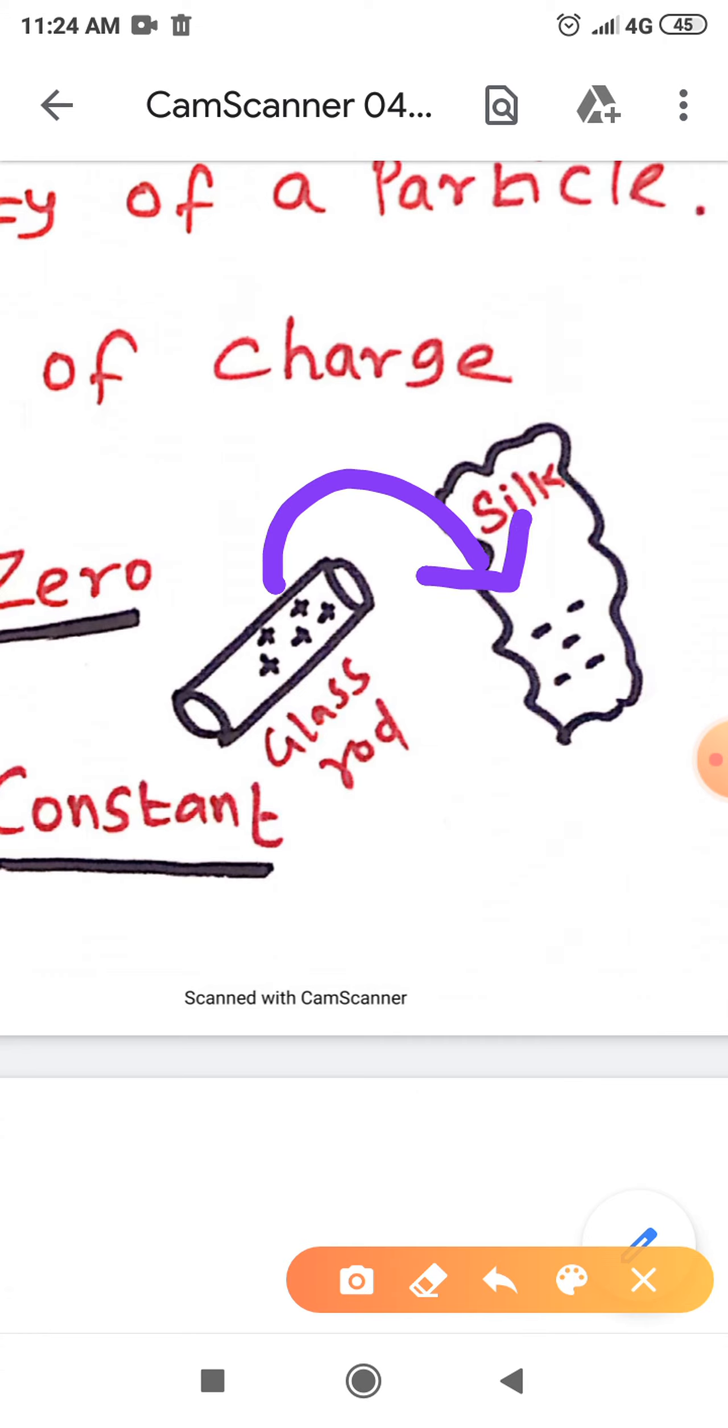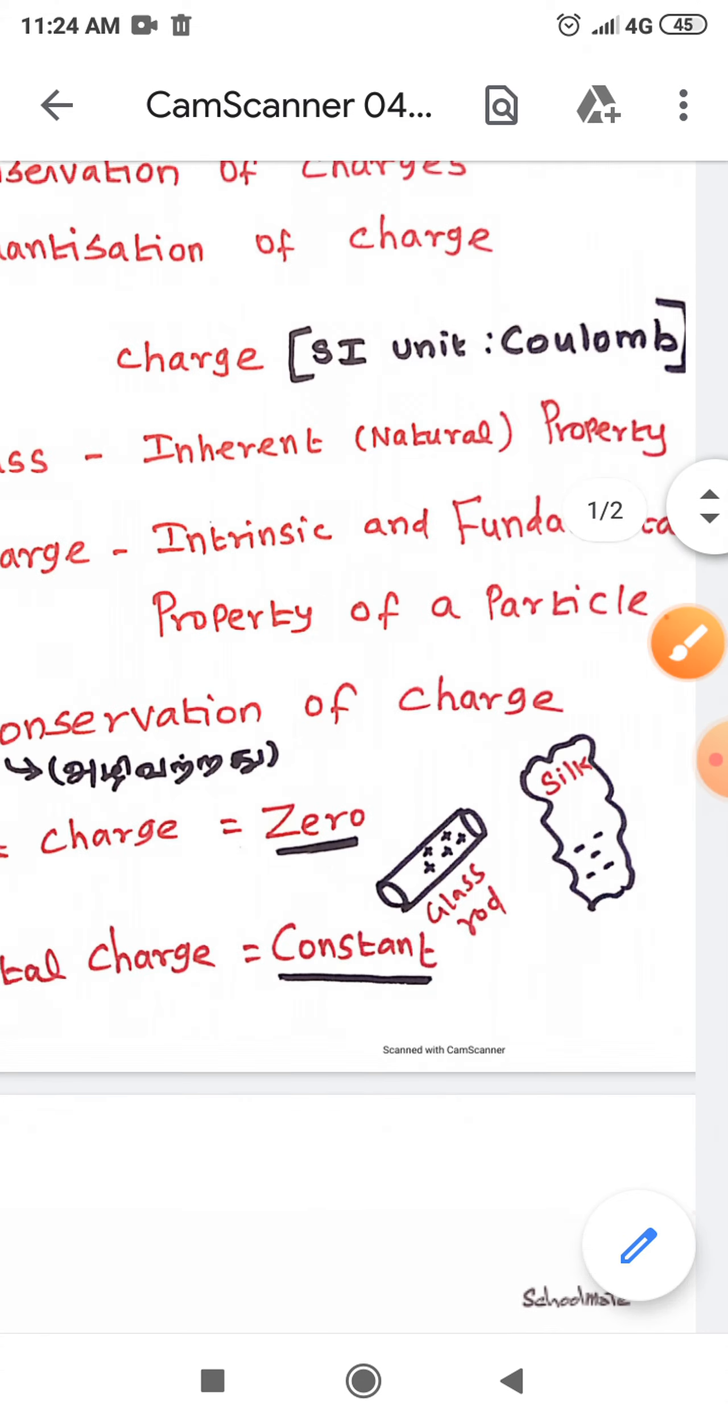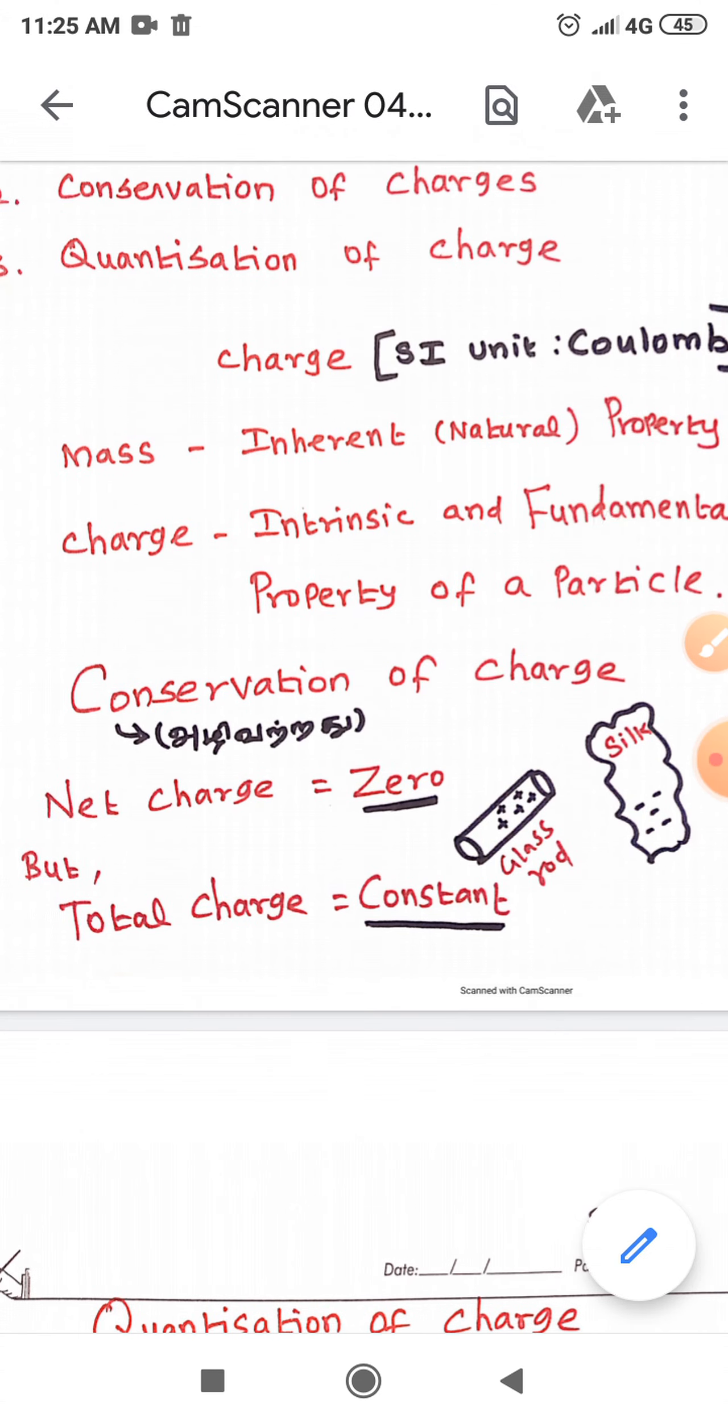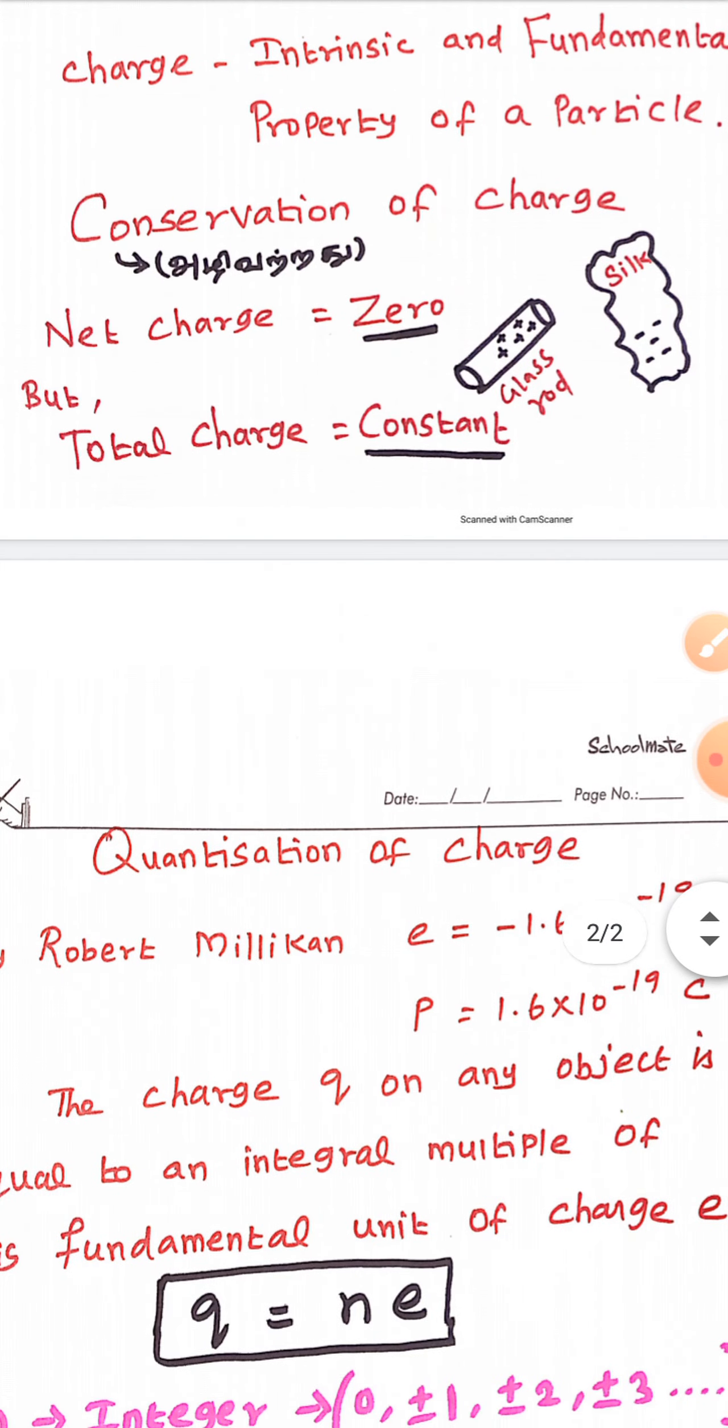And the glass rod loses the electrons, so therefore it acquires positive charges. In this case, neither charges are produced nor the charges destroyed. Therefore, the total charge of this system is constant.